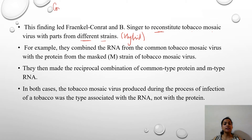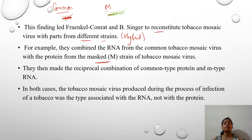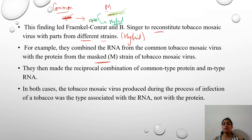They had a common type of TMV and an M type — the masked strain of TMV. The common type had its RNA along with its protein coat, and the M type had its own RNA along with its particular protein. They made a hybrid by mixing the constituents of these two different strains — taking the RNA of the common type and mixing it with the proteins of the M type — and this hybrid TMV was reconstituted in their experiment.